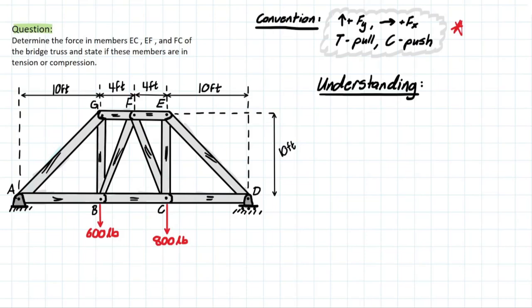Well, let's identify the members that we're looking for. So, we have a member here, we have a member here, and a member here. So, these three members kind of triangulate here, and we're looking to find an efficient way to solve for these members.